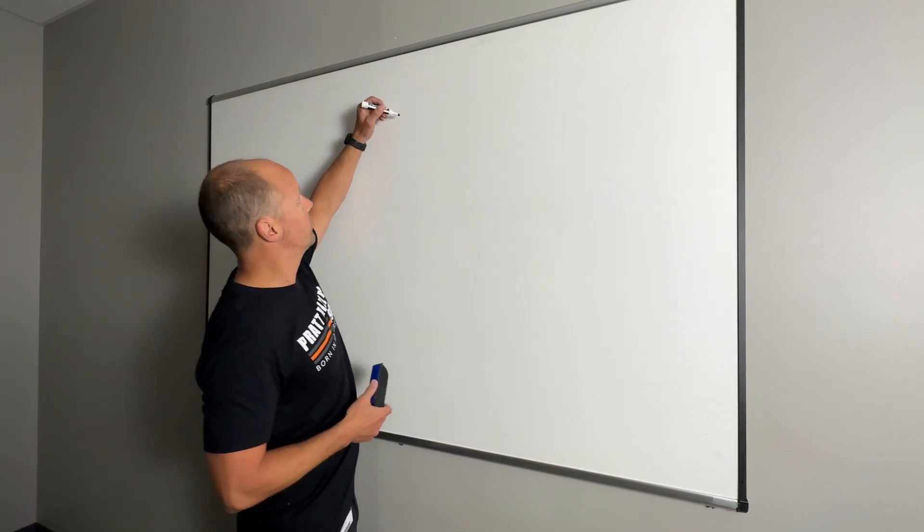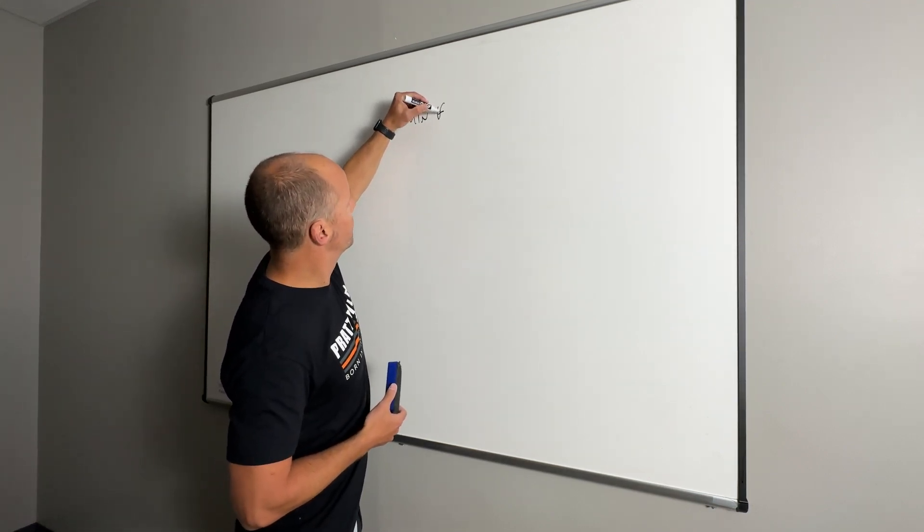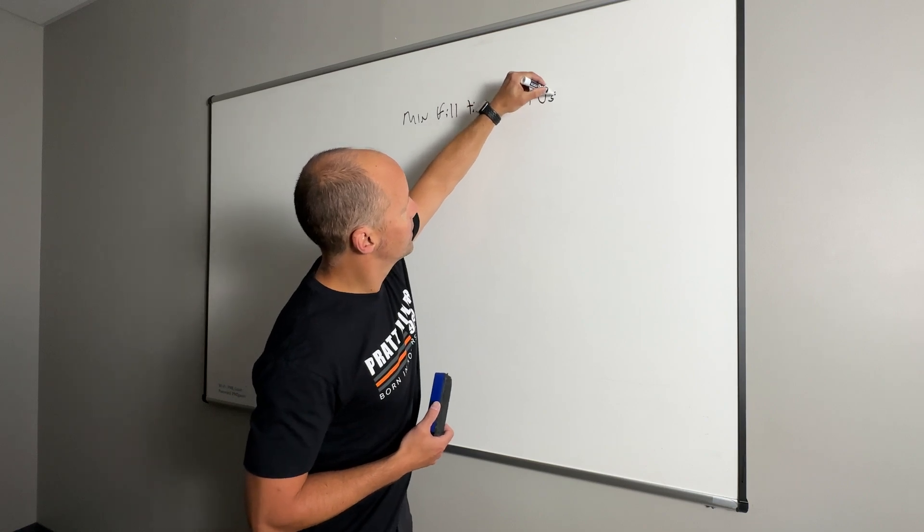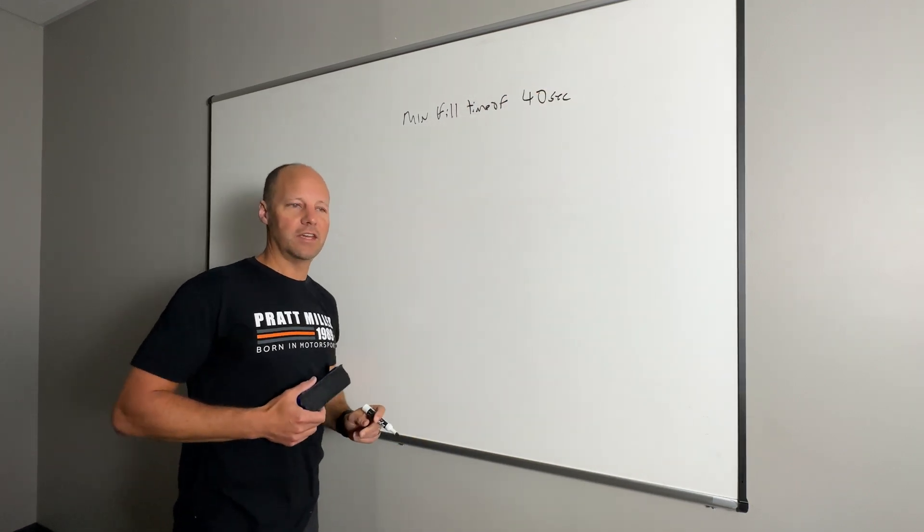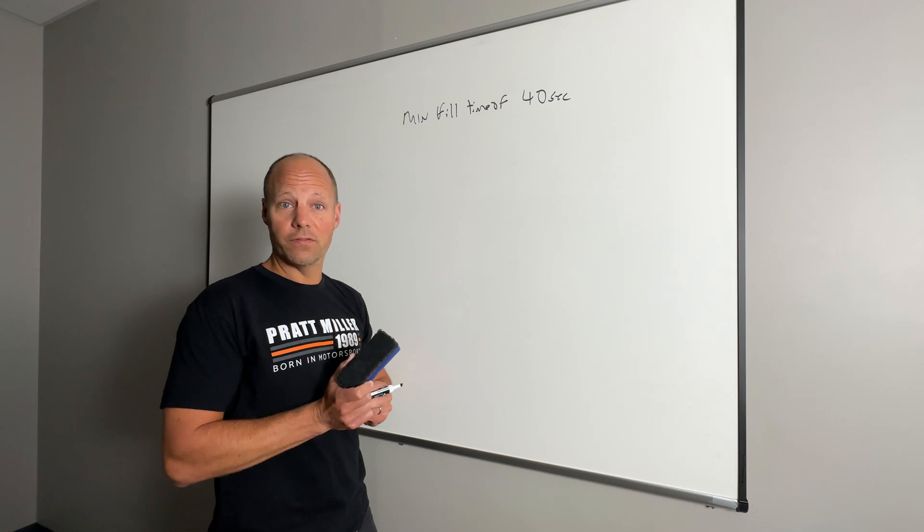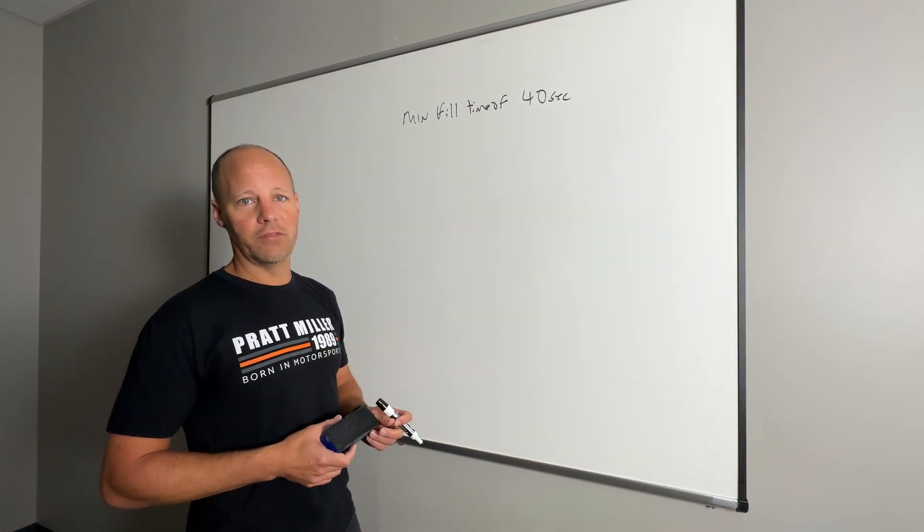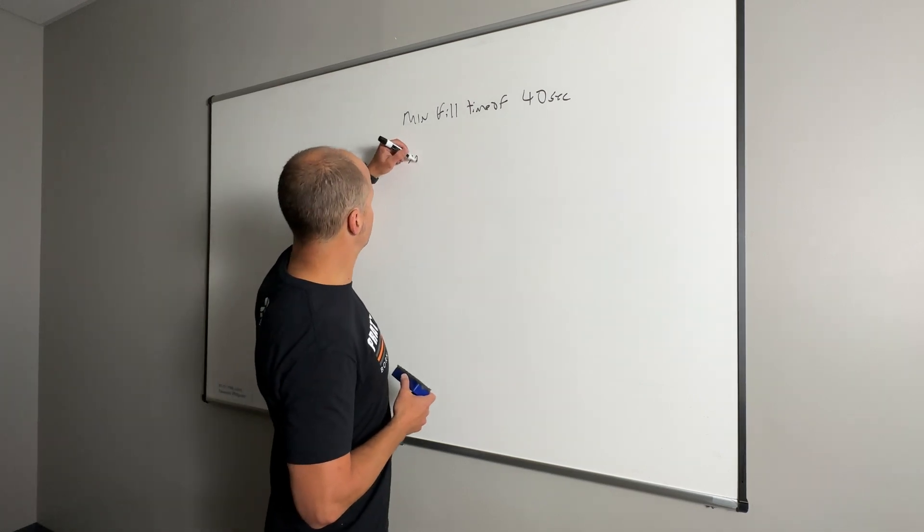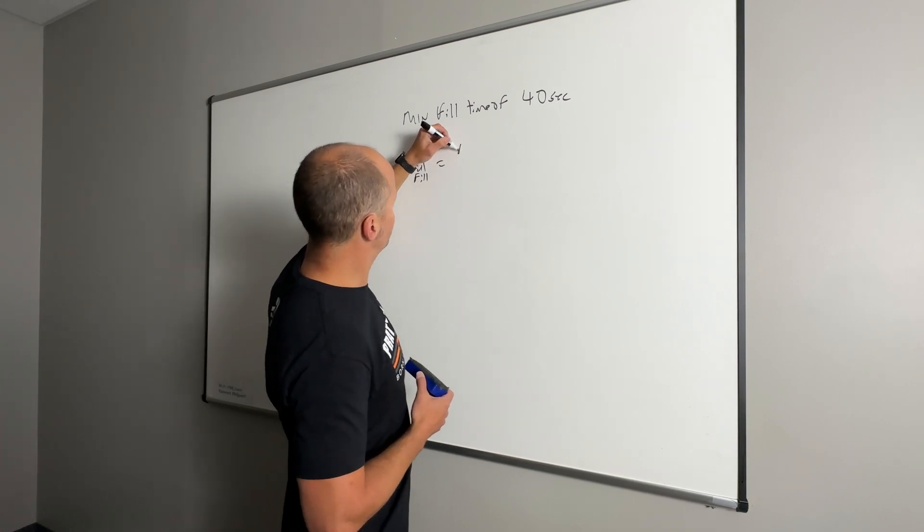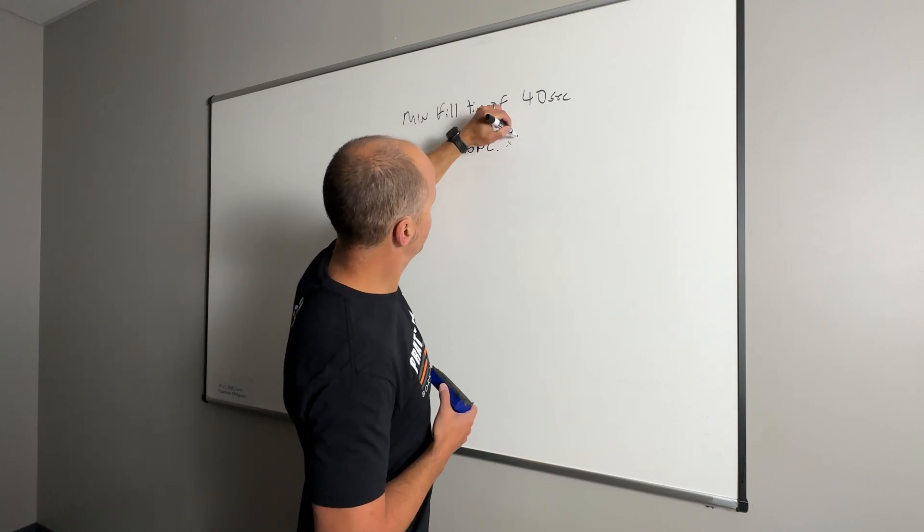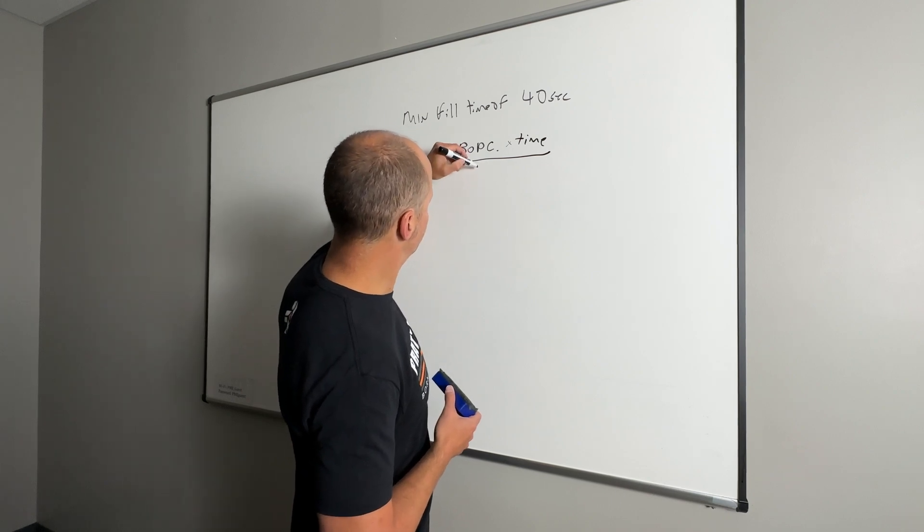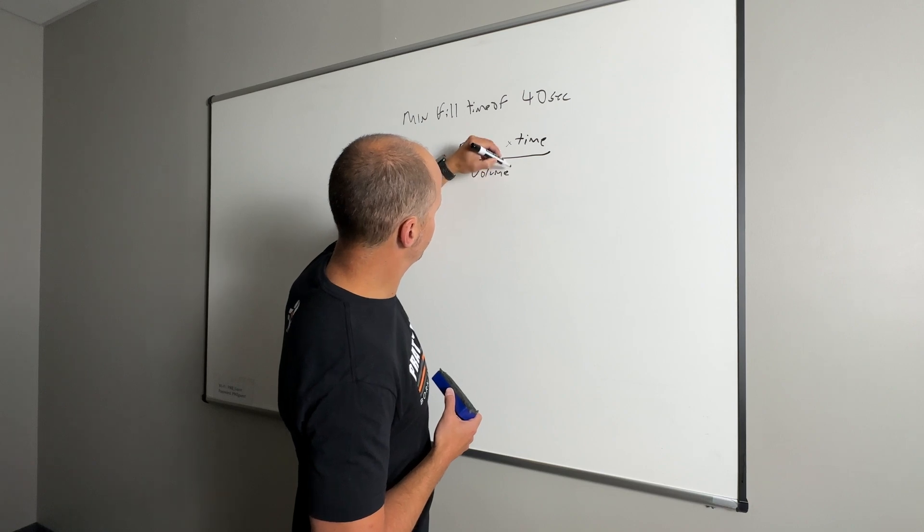So some of the basics: we have a min fill time of 40 seconds. And then IMSA also provides an equation in the rule book, which you can get online too, that basically is used to find the fill time during non-full fill stops. So the equation is: min full fill equals your BOP capacity times the time, and that's all over the volume of the fill.